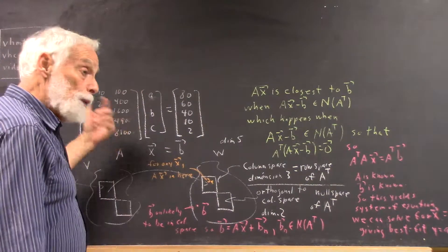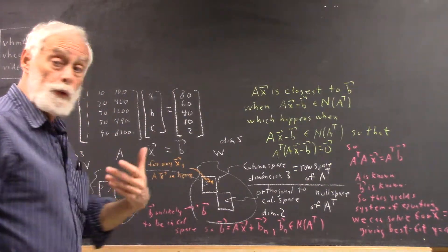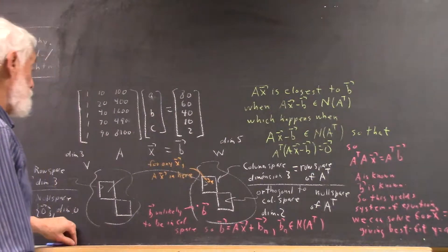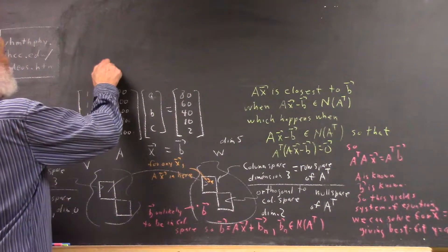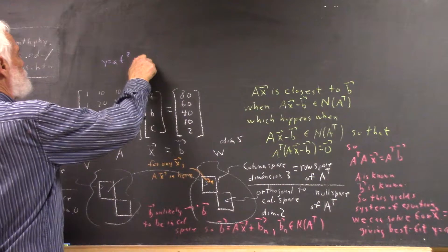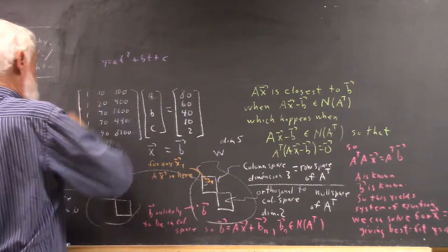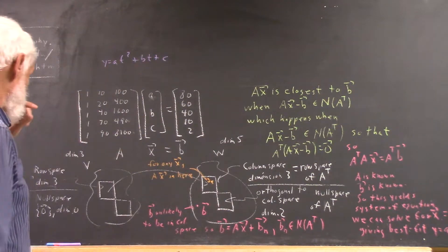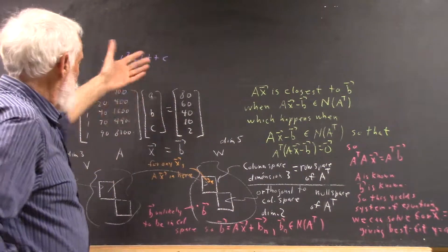A, B, and C will be the numbers that we put into our quadratic model. Remember, in our quadratic model, is Y equals AT squared plus BT plus C. So how do we do this?